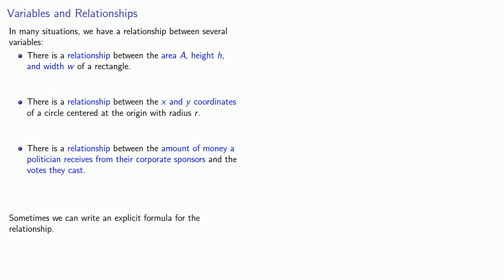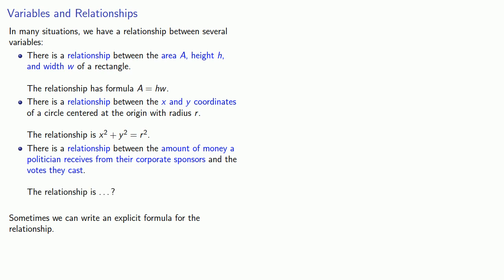Sometimes we can write an explicit formula for the relationship. So for the area relationship, we can write this as a equals h times w. For the relationship between the x and y coordinates of a circle, we can write that as x squared plus y squared equals r squared. And the relationship between the amount of money a politician gets from their corporate sponsors and how they vote — well, maybe we can't write a formula for that. And maybe that's part of the problem.